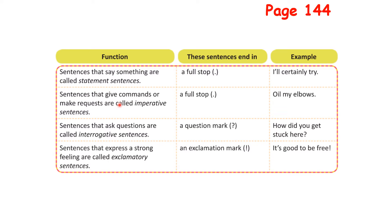Sentences that give commands or make requests are called imperative sentences — they end with a full stop. Sentences that ask questions are called interrogative sentences — they end with a question mark. Example: 'How did you get stuck here?' Sentences that express strong feeling are called exclamatory sentences — they end with an exclamation mark. Example: 'It's good to be free!' Did you read along with me? If you feel I was very fast, please play back and read slowly.